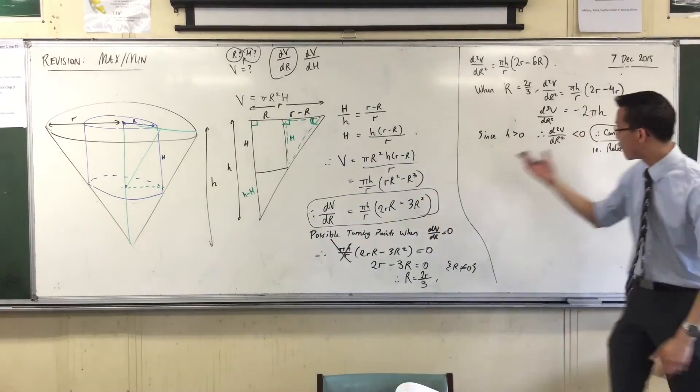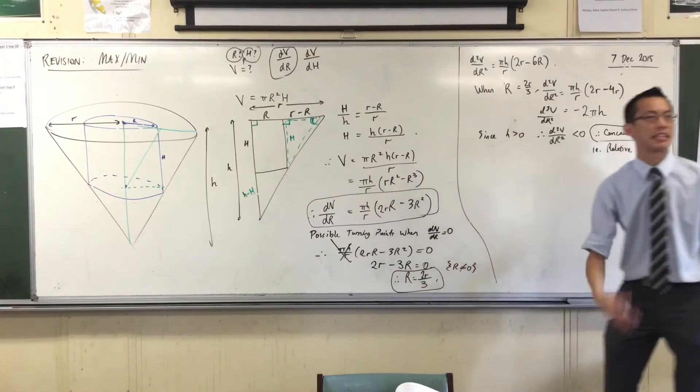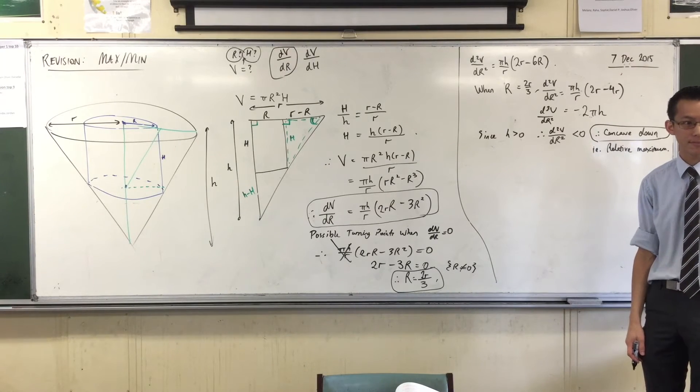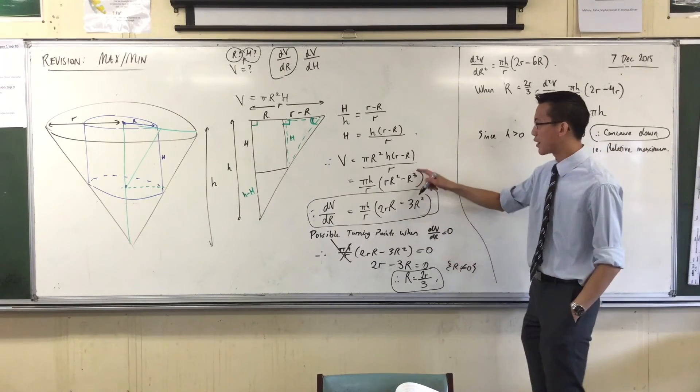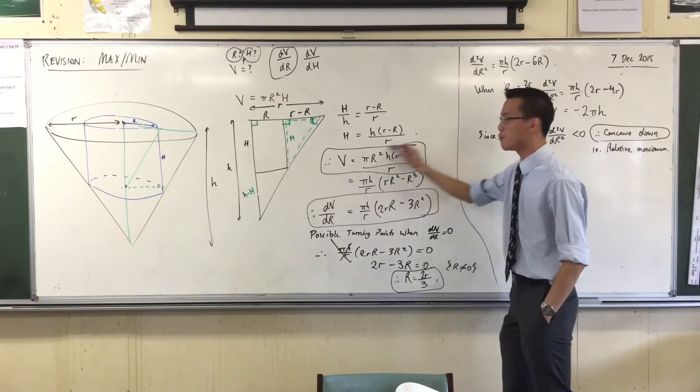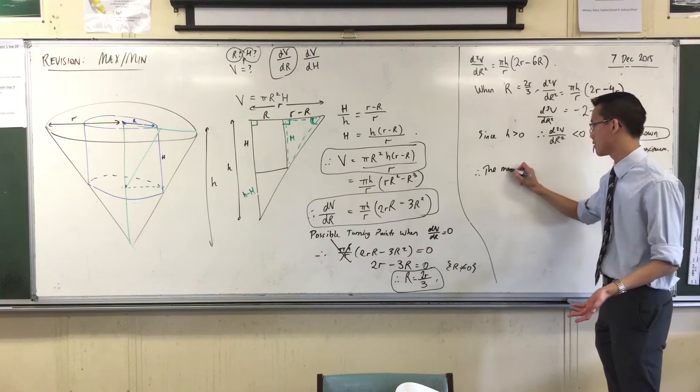All right, I've found a maximum, right? So pretty much, I've done all the hard work. That's the radius that gives me the maximum I want. What was the actual question? So sub that back in to find out. Yeah, good. Here, right here, is my function, is my volume as a function of that capital R, right? So I can say, therefore, the maximum volume is...